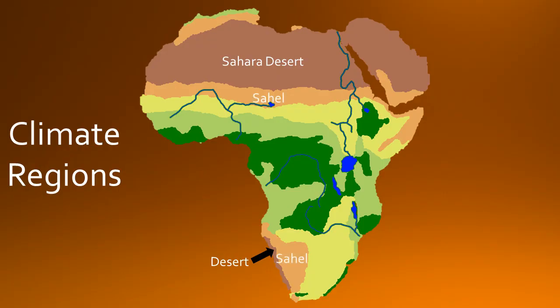This is the Sahel. It is the narrow strip of semi-arid grassland found south of the Sahara Desert. The word Sahel roughly means shore. This is the border between the desert and the grassland, and this region is most prone to desertification.